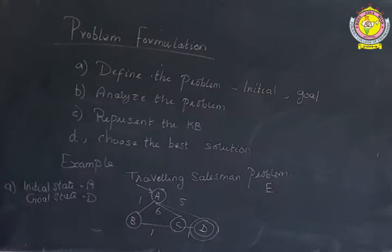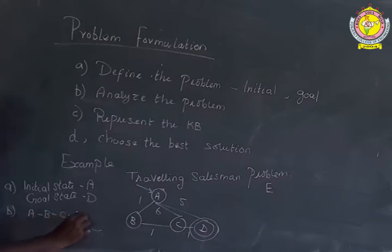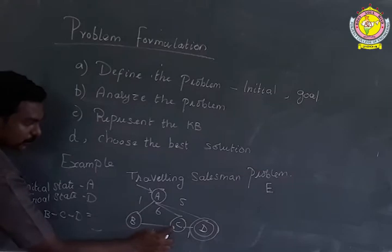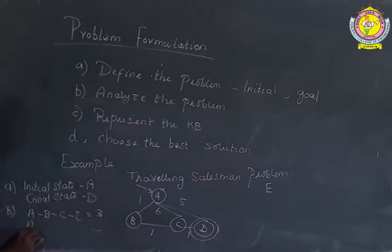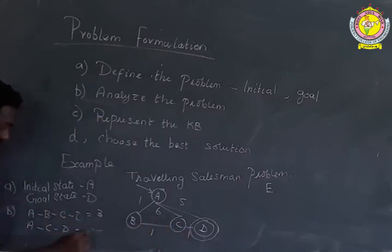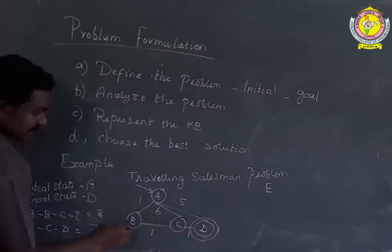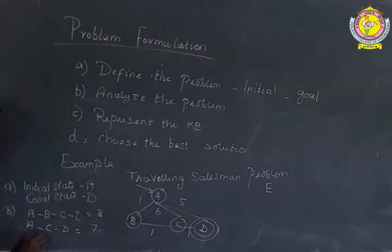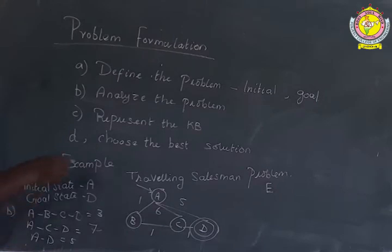The second step is to analyze the problem — what are the possible ways to reach the goal from A? One possible path is A → B → C → D, with a path cost of 1 + 2 + 3, which is not directly stated but follows the edges. Another possible way is A → C → D, where A to C costs 6 and C to D costs 1, totaling 7. The third possible way is A directly to D, with a path cost of 5. So there are three possible solutions, and we need to find which one is the best.